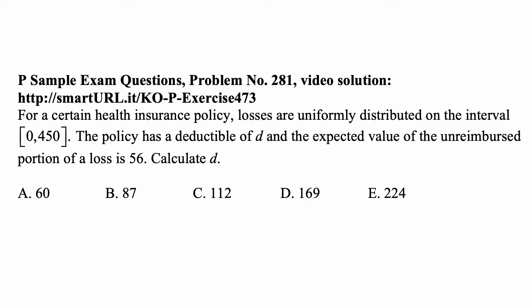Here's a problem for today for exam P on probability. For a certain health insurance policy, losses are uniformly distributed on the interval from 0 to 450. The policy has a deductible of D and the expected value of the unreimbursed portion of a loss is 56. Calculate D.